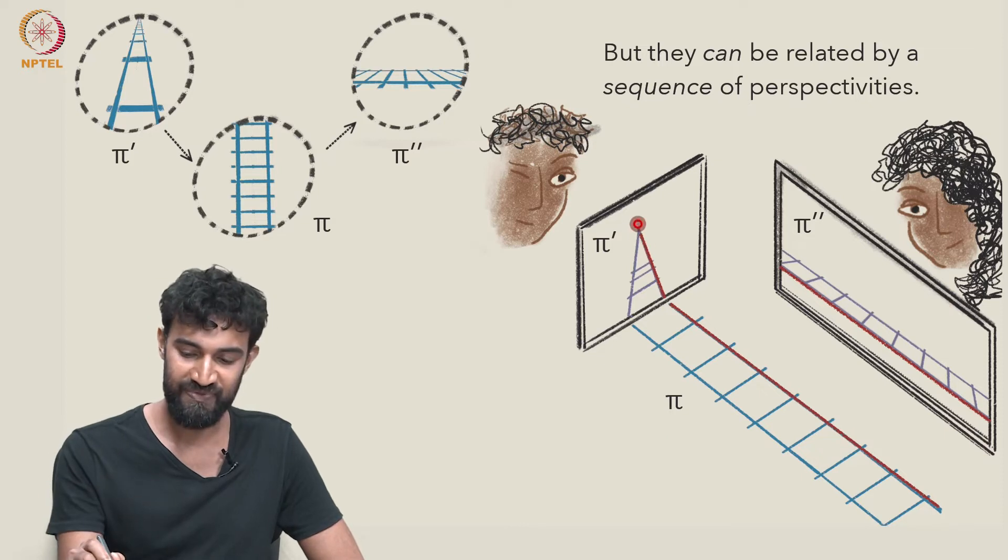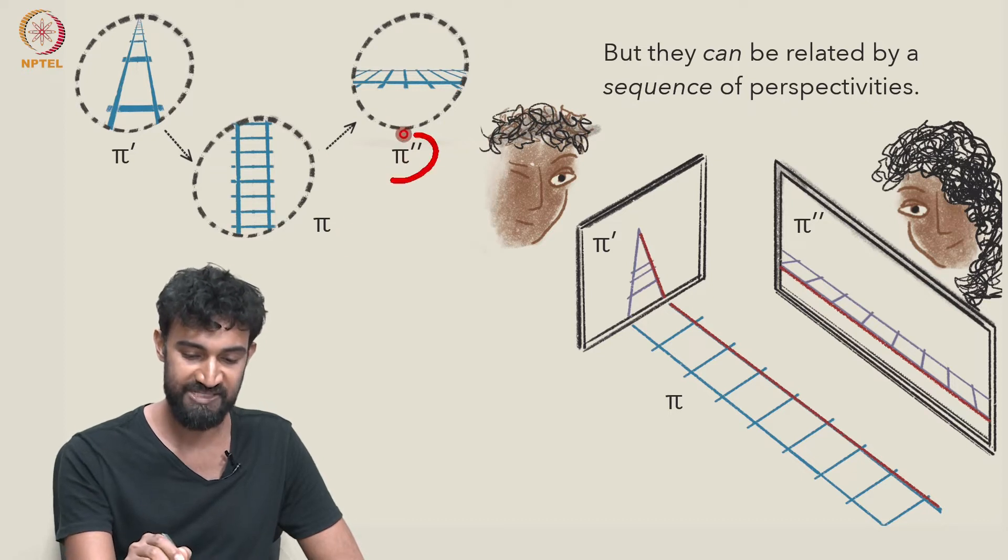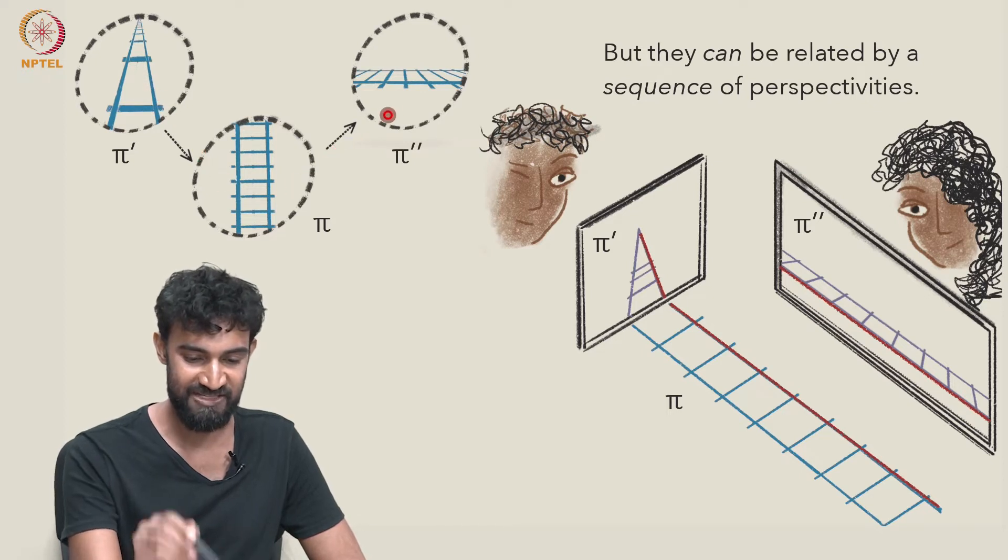So we can map the image here down to the ground plane in π, and then up to this second picture plane, π″, to get from this image to this image.